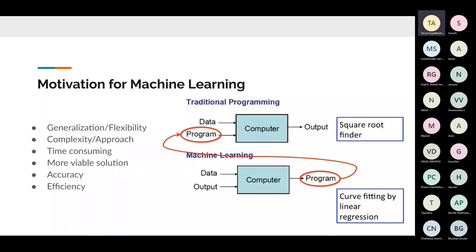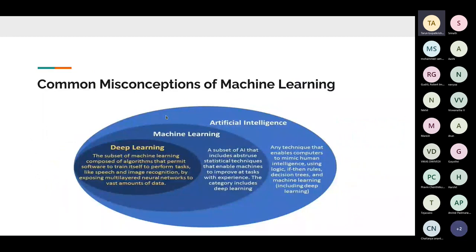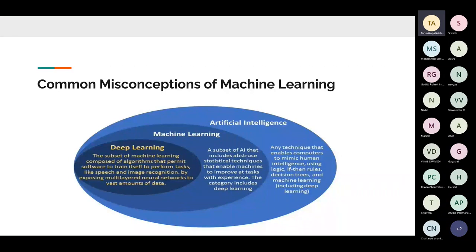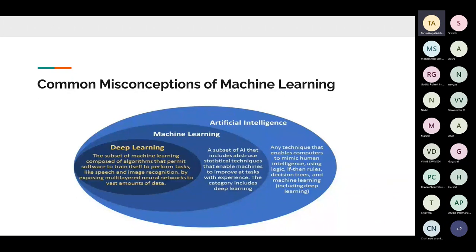Some common misconceptions: machine learning is actually a subfield of AI. AI falls under a really huge domain — the whole point is to solve problems the way humans do. Machine learning is a subfield where we try to solve problems in a more statistical and mathematical way.